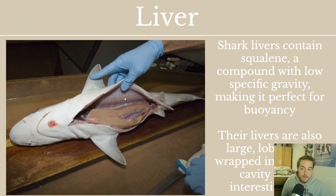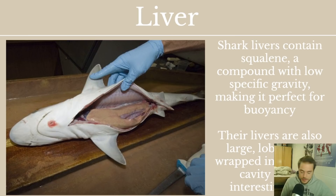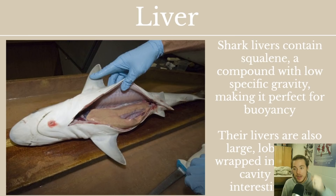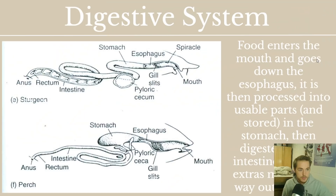In a shark, the liver is actually huge and multi-lobed, wrapping around inside the body cavity. It contains squalene, a compound with low specific gravity, which makes it perfect for buoyancy. Sharks don't have swim bladders like other fish, so instead their liver contains squalene to stay buoyant. Their livers are large, lobed, and wrapped in the body cavity — you actually have to take other things out first before you can remove a shark's liver.